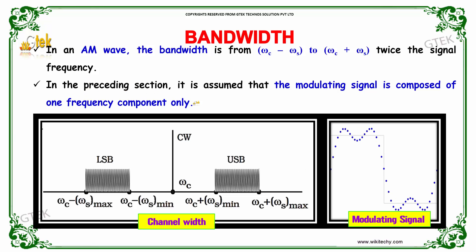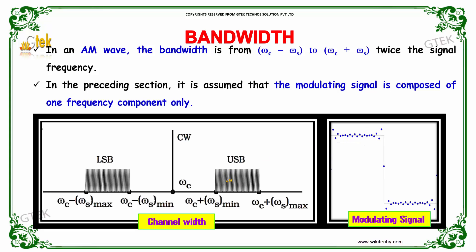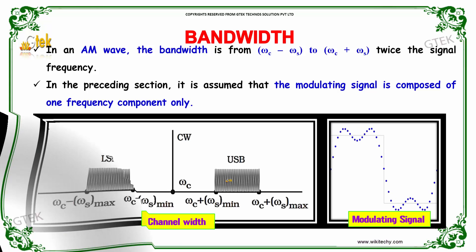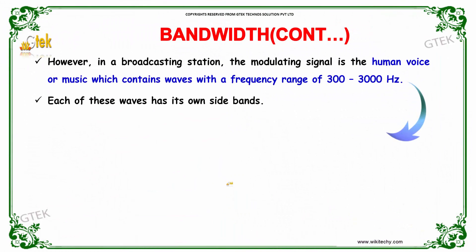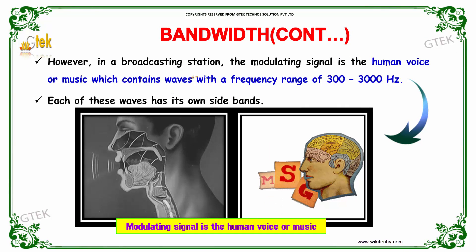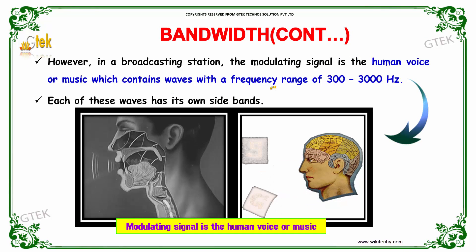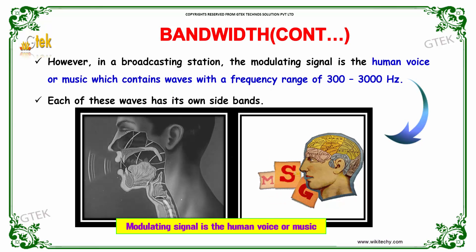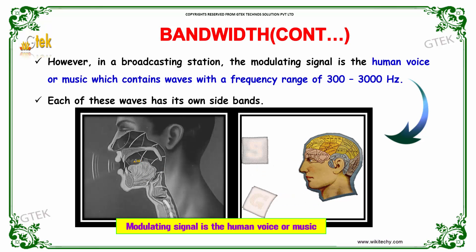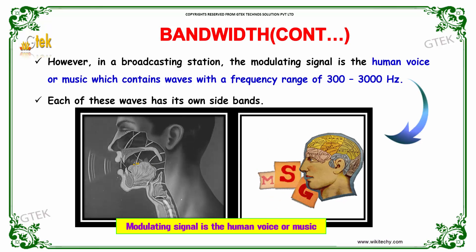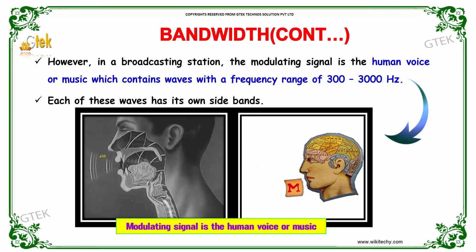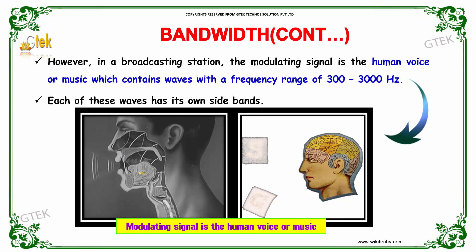In the preceding section it is assumed that the modulating signal is composed of one frequency component only. However, in a broadcasting station the modulating signal is the human voice or music, which contains waves with a frequency range of 300 to 3000 Hz. Each of these waves has its own sidebands.